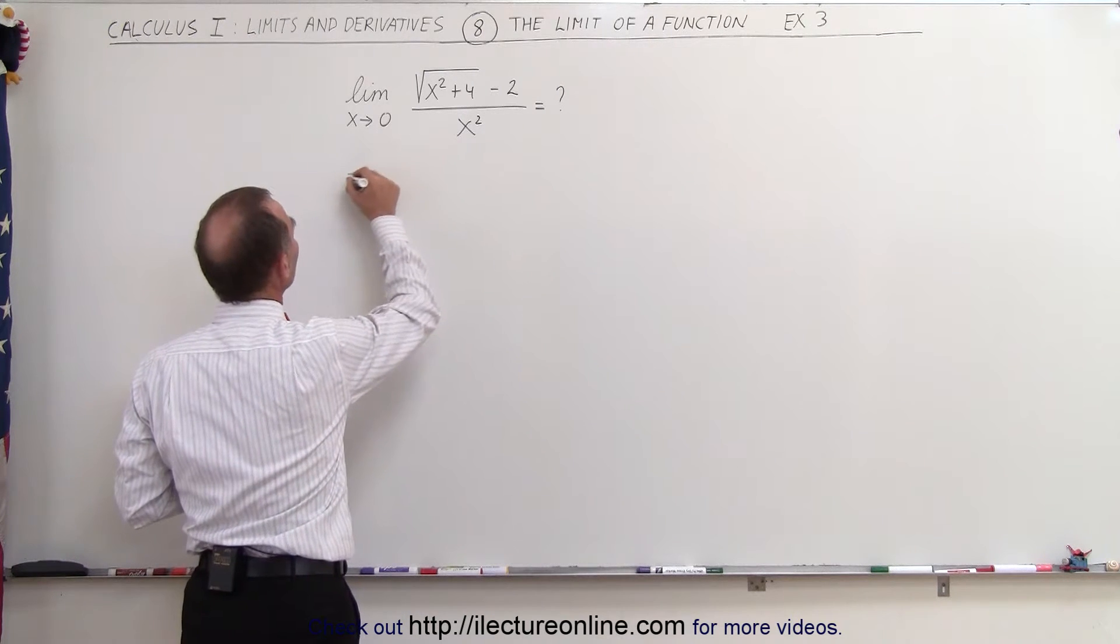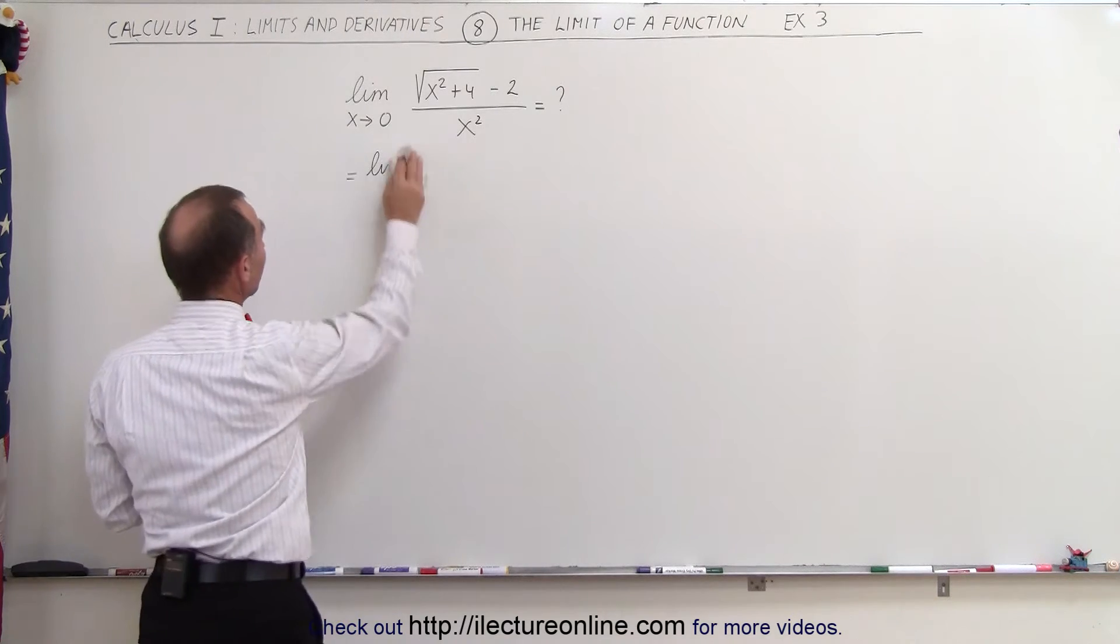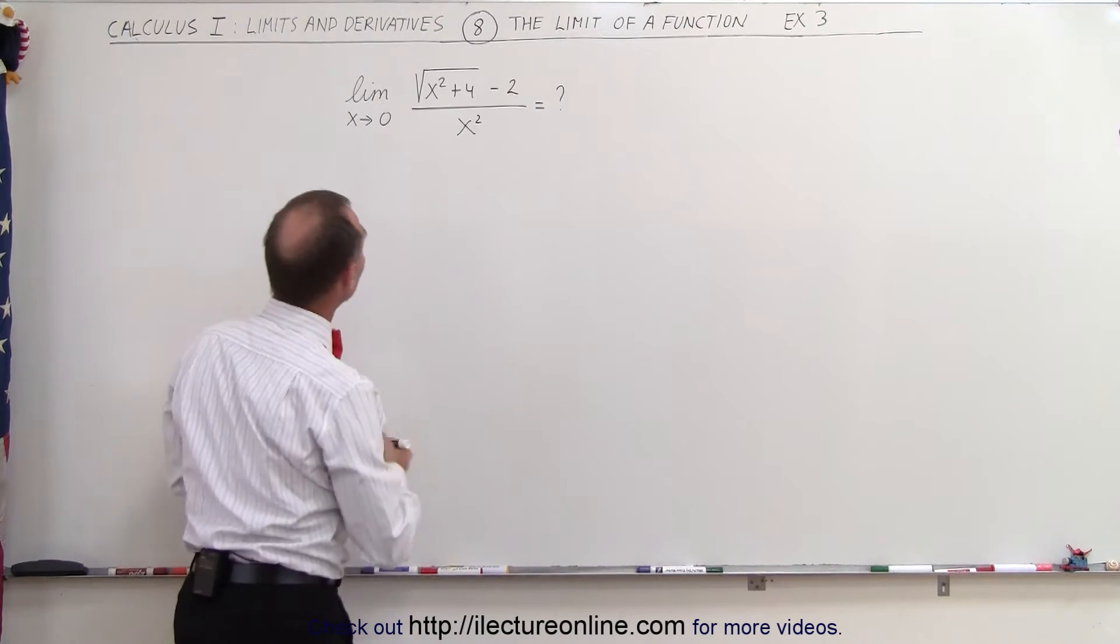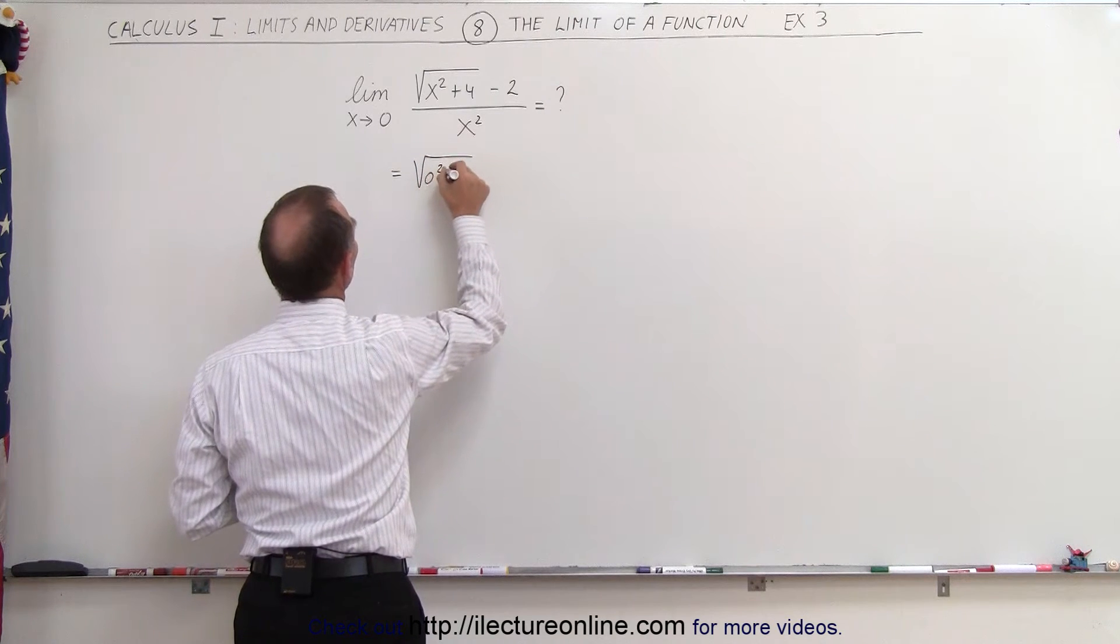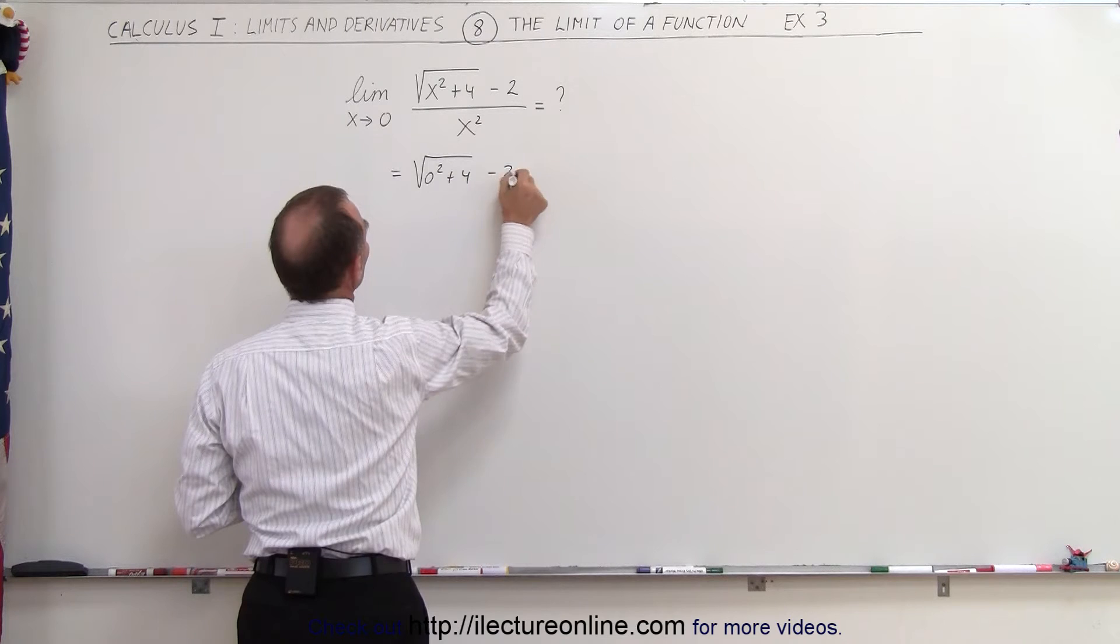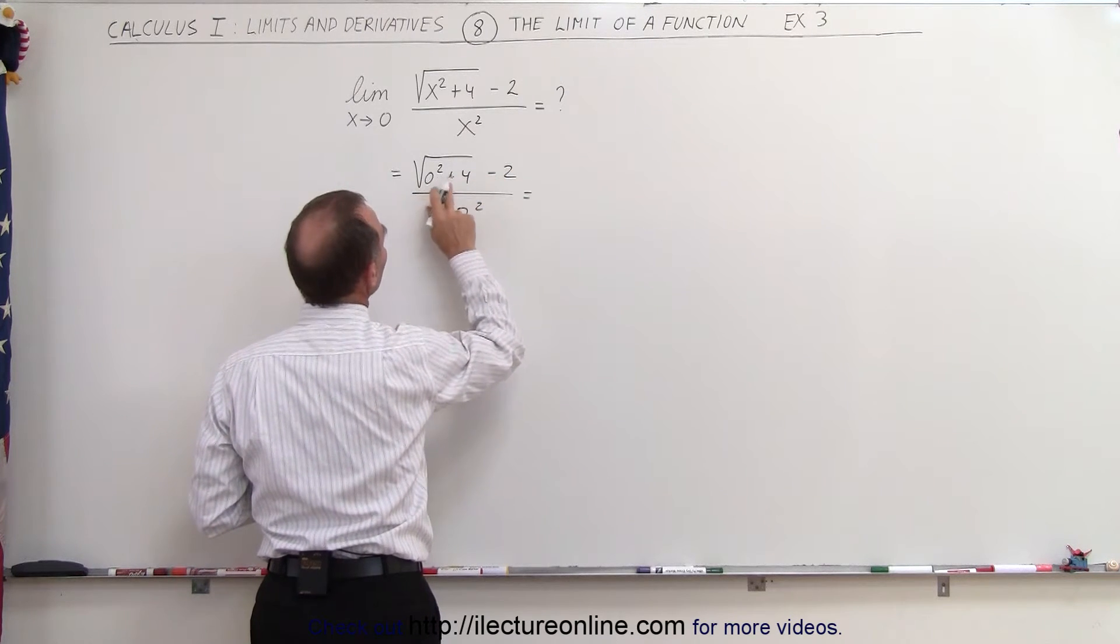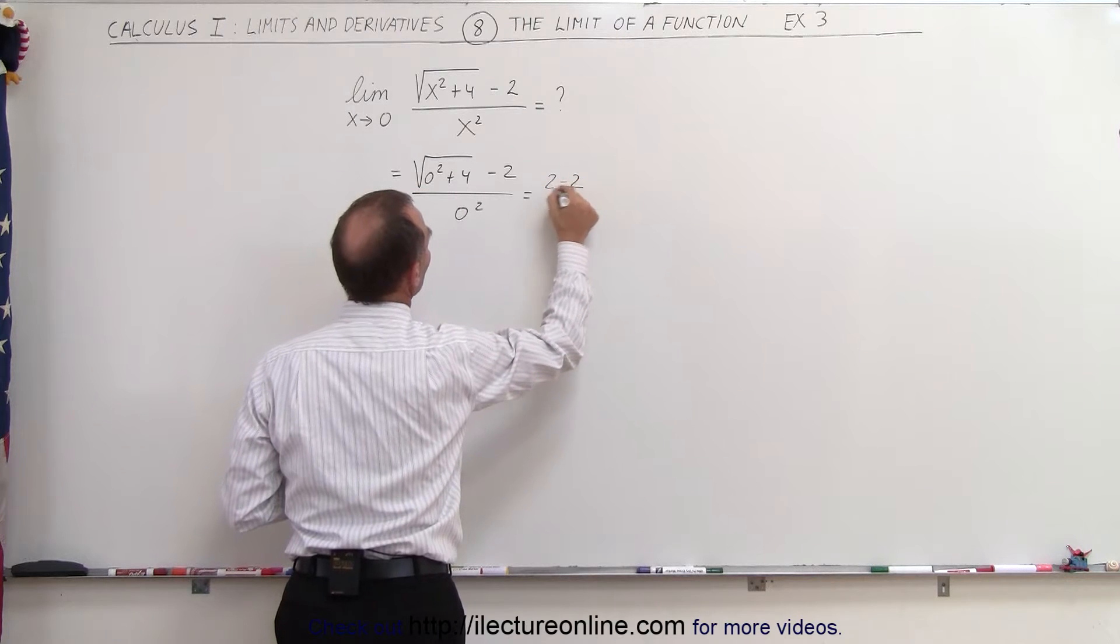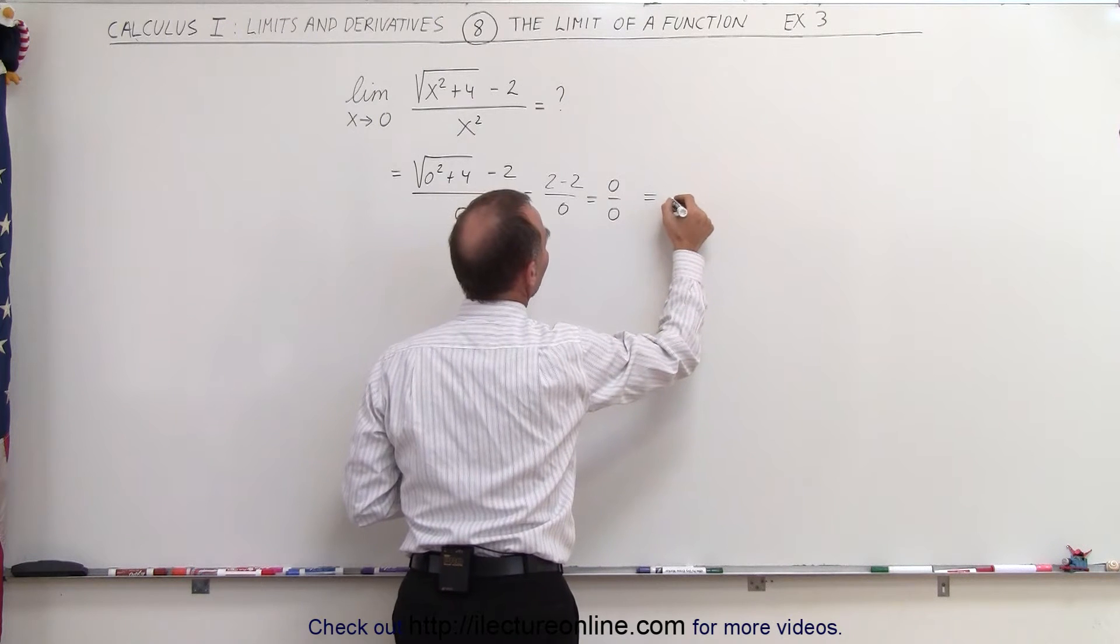So this would be equal to the limit. Actually, what we should do is simply plug in the value for x. So let's say that this is equal to the square root of 0 squared plus 4 minus 2 all divided by 0 squared, which is equal to, well, that would be the square root of 4, which is 2 minus 2 divided by 0, which is 0 over 0, which is, of course, not defined.